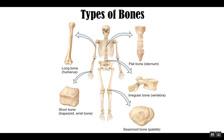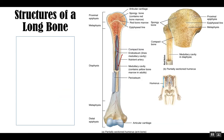The final category is sesamoid bones, found within a tendon. The number one example of a sesamoid bone — when you see that word, it's typically referring to the patella, or kneecap. A sesamoid bone is found completely encircled or surrounded by tendon. The patella is found within what's called the quadriceps femoris tendon. Those are the different types of bones. We're going to look a little closer at long bones and their basic structural features.